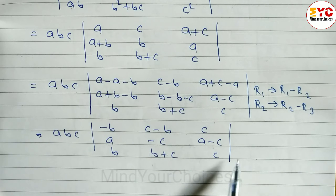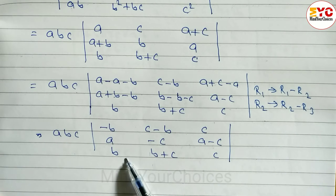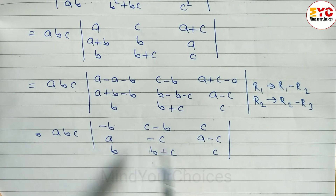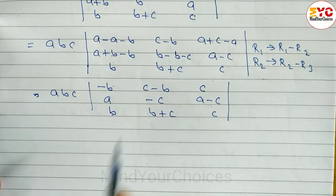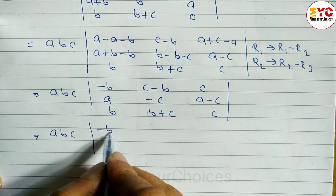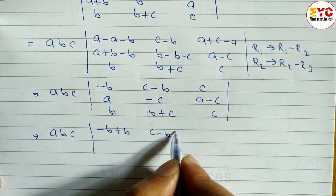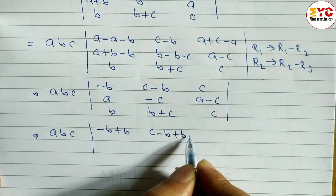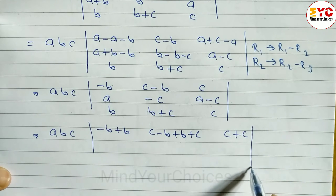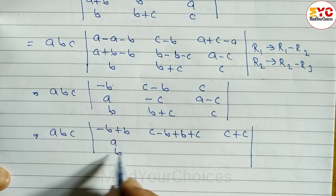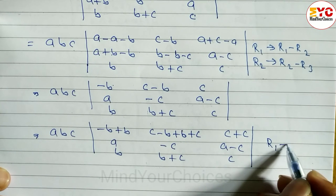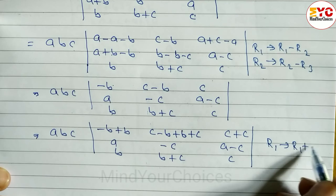Now we add row 1 and row 3 to apply R1 → 2R1 + R3. Adding first and last rows: c minus b plus b plus b plus c, similarly combining other elements. We get: 0 + 0 = 0 in one position, and 2c in another. After this operation, row 1 becomes [0, 2c, 2c], and we continue simplifying.